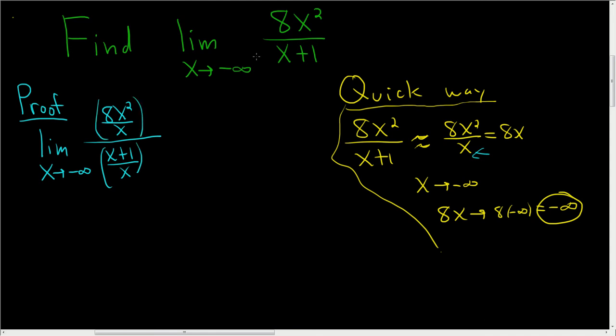All we really did was we took 1 over x divided by 1 over x and we multiplied by it. That's 1, right? This cancels, so it's okay.